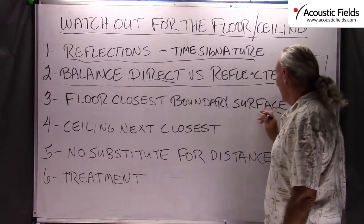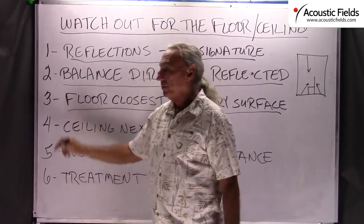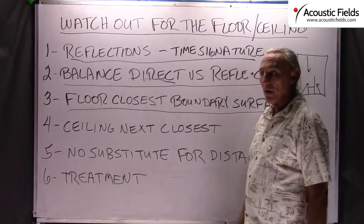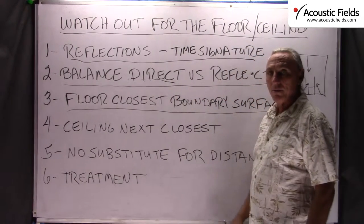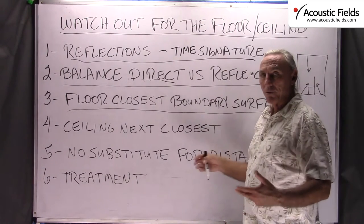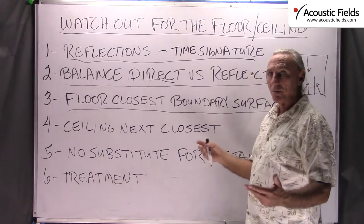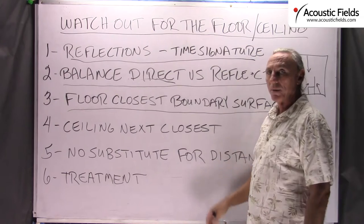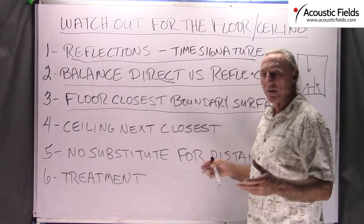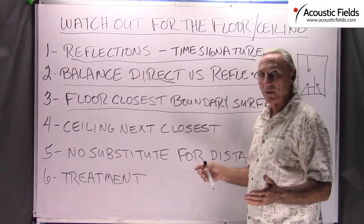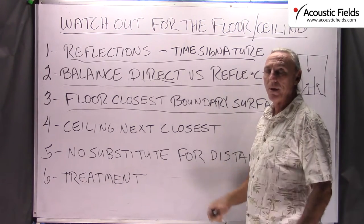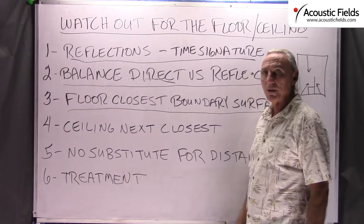The floor is the closest boundary surface, so what kind of treatment do we need on the floor? The standard is wood or carpet — those are your two opposites. Wood is reflective, carpet is absorptive. So the answer is there is no answer. You have to balance it out with the rest of the boundary surfaces in the room.